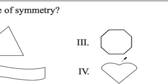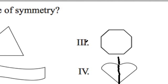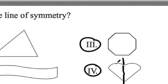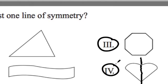What about this one right here — a heart? It looks like if I divide it right down the center, it has one line of symmetry. So the octagon and the heart both have at least one line of symmetry.